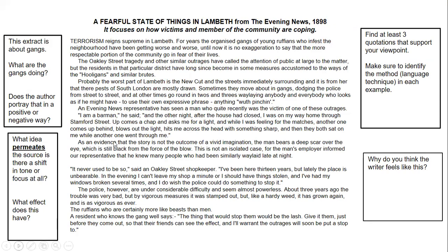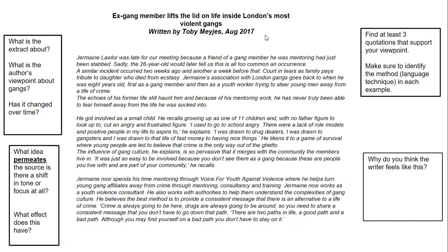Then let's go on to Source B — exactly the same, but this one is written in 2017, so you're looking for a different perspective to Source A. Now that you've made your annotations on Source A, look at this source and find any similarities or differences. You should really only be looking for differences. Although you might find a general sense of similarity in the overarching viewpoint about gangs not being pleasant, what are the subtle differences? That's what's going to help you get those high marks. Take about eight minutes to read the source and annotate language techniques and specific words.